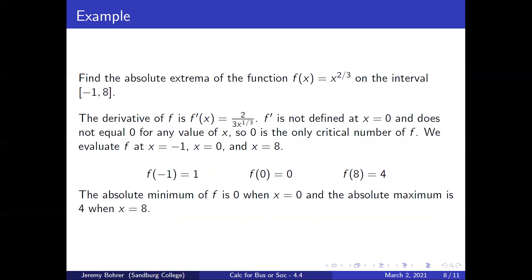Find the absolute extrema of f(x) = x^(2/3) on the closed interval [-1, 8]. The derivative is f′(x) = (2/3)x^(1/3). f′ is not defined at x = 0 and does not equal zero for any value of x, so zero is the only critical number of f. Evaluating: f(-1) = 1, f(0) = 0, f(8) = 4. The absolute minimum of f is 0 when x = 0, and the absolute maximum is 4 when x = 8.